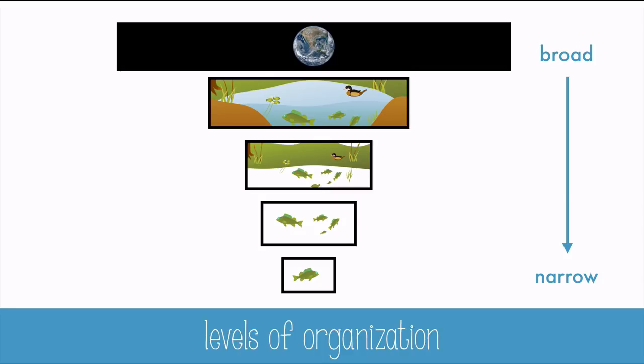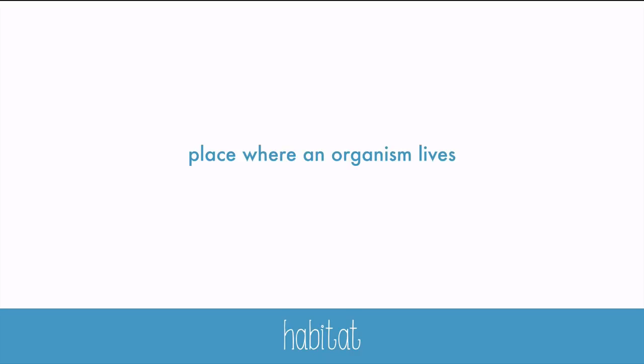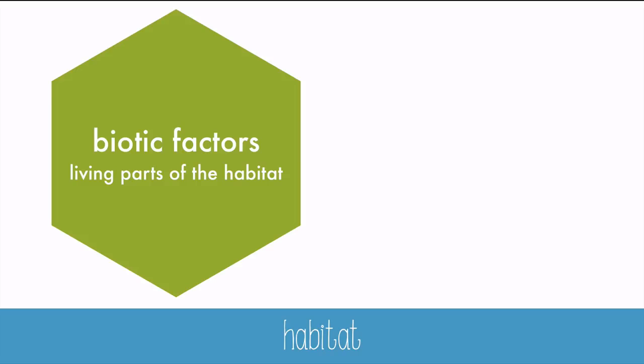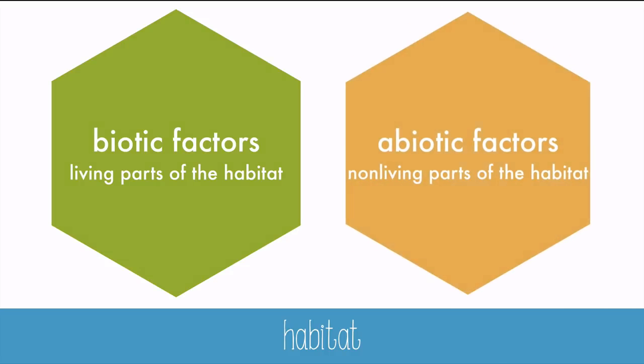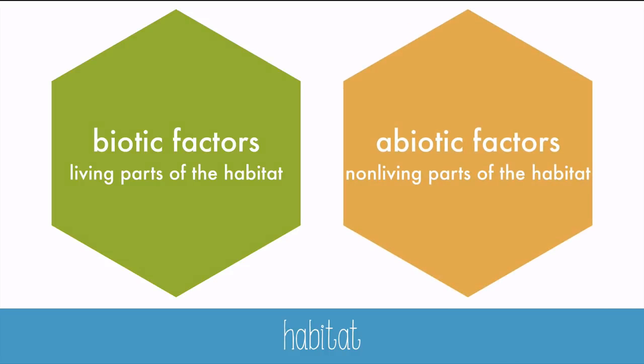When we talk about where an organism lives, instead of saying ecosystem — which might still be a fairly large area — we could talk about its habitat. It's just a word that means the place where an organism lives. A habitat includes both biotic and abiotic factors. Biotic factors are the living parts of the habitat, and when you add the letter A in front of the word, it means not living. So abiotic factors are the non-living parts of the habitat. Using the pond ecosystem as an example, biotic factors include grasses, algae, fish, birds, and insects. The abiotic factors include the pH of the water, rocks, soil, the sunlight, and temperature.